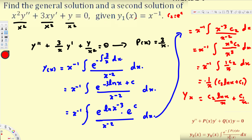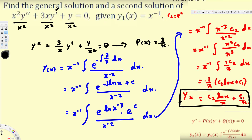This is our general solution — let's box it. Notice that when c₂ = 0 and c₁ = 1, we recover y₁(x) = 1/x, which was our given first solution. To find the second solution, we set c₁ = 0 and c₂ = 1, giving y₂(x) = ln(x)/x. That is the second solution for this differential equation.